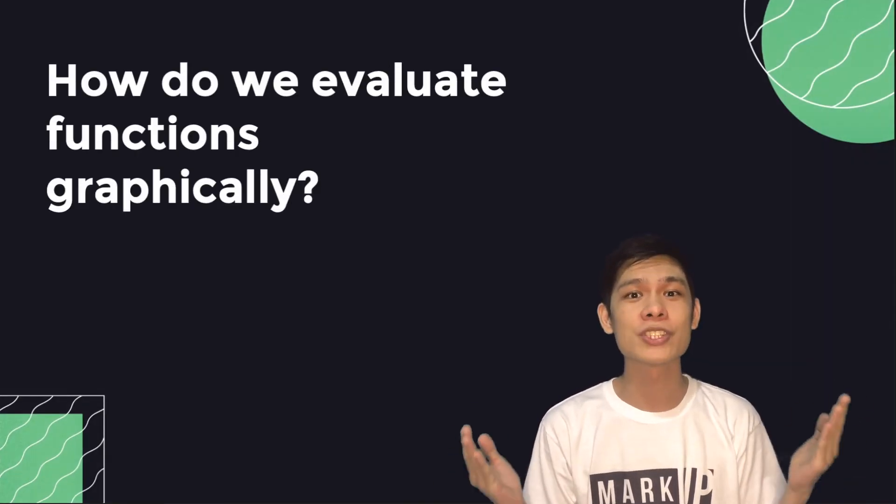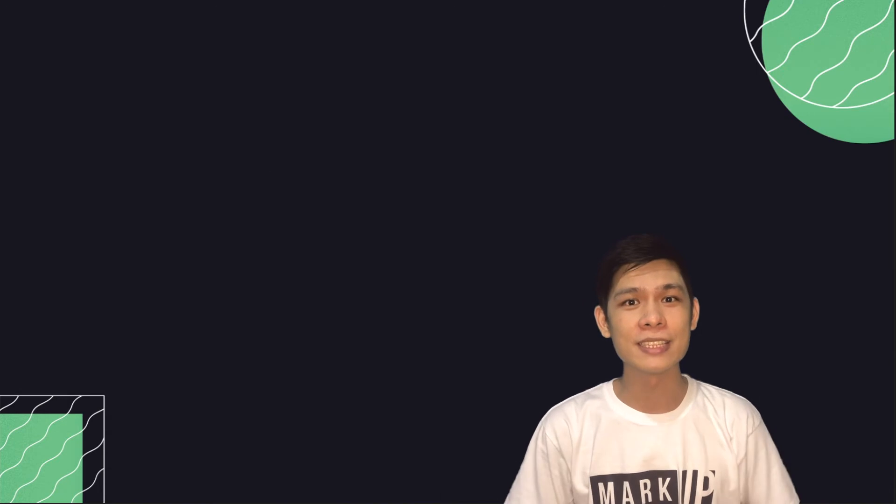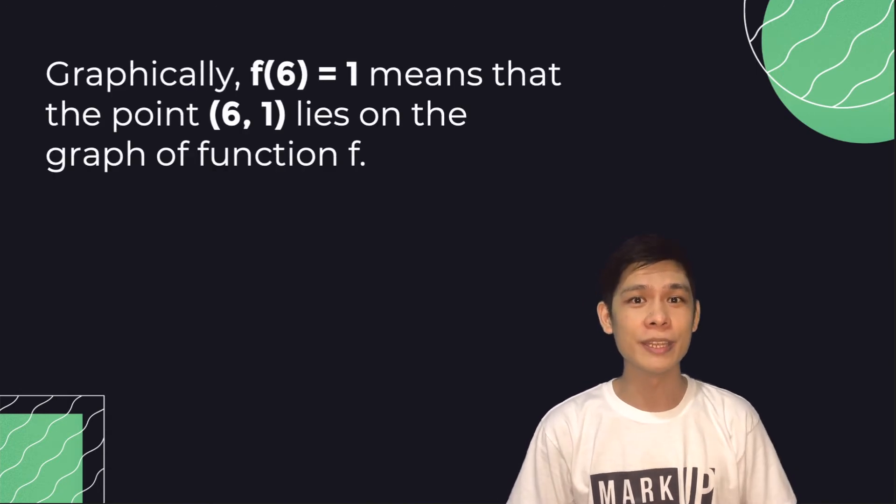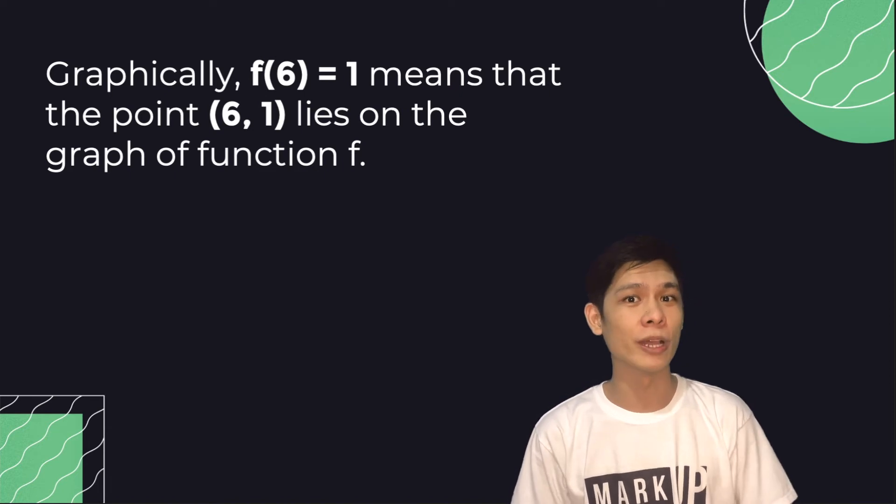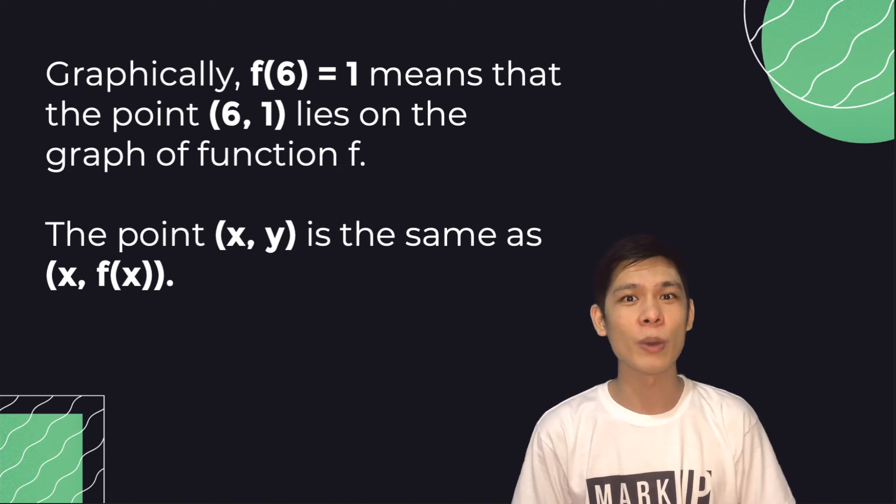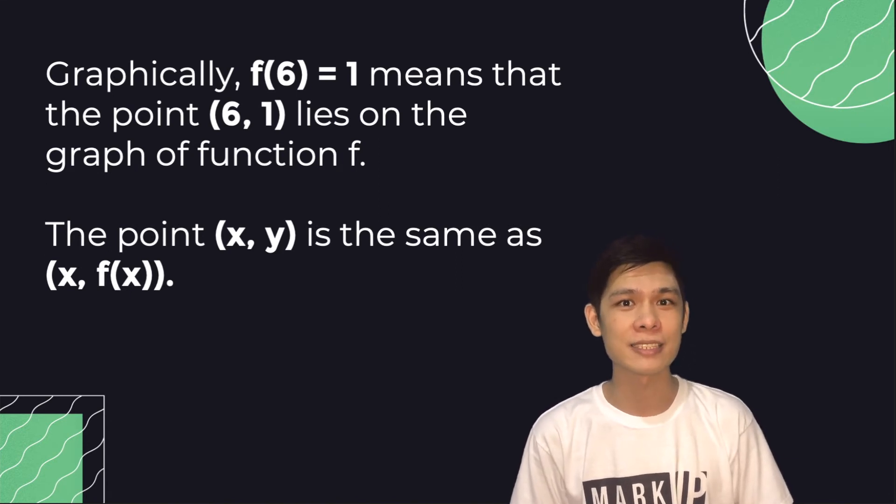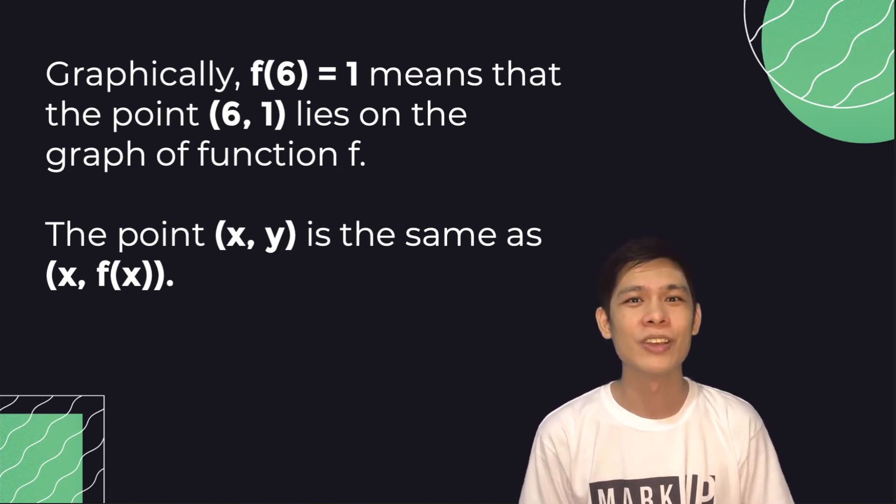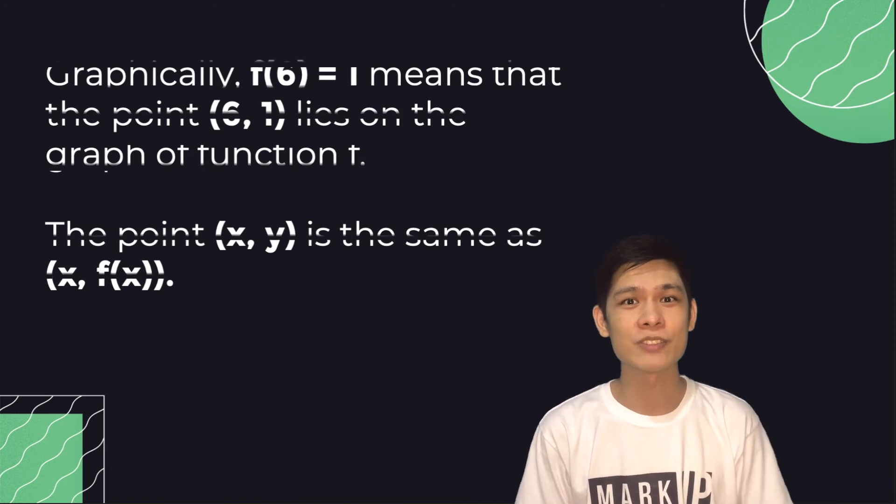And how do we evaluate functions graphically? For instance, remember that graphically, f(6) equals 1 means that the point (6, 1) lies on the graph of function f. This goes to show that the point is also the same thing as the x in f(x). To further explain this, let us have some examples.